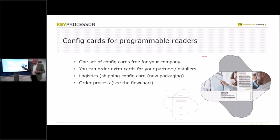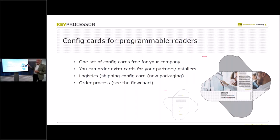For your teams, we will send one set — the six different types of configuration cards we showed on the previous slide. You can order extra cards for your partners, system integrators, or installers when they want to do the configuration themselves. Logistics will ship the configuration cards in new packaging, and on the card there will be information about what type it is — Wiegand, certified UID, DESFire, with or without pin code — plus a short explanation of how to program the reader. Power it up, batch your configuration card — that's it, nothing more.